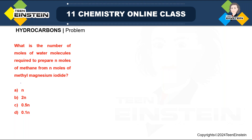What is the number of moles of water molecules required to prepare N moles of methane? You are preparing N moles of methane. Starting from methyl magnesium iodide, because the question asks how many water molecules are required to prepare methane starting from methyl magnesium iodide — water is one starting material and methyl magnesium iodide is another. The starting materials are: methyl magnesium iodide and water.